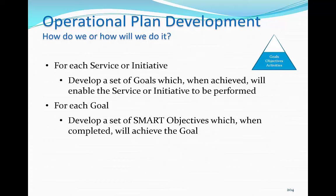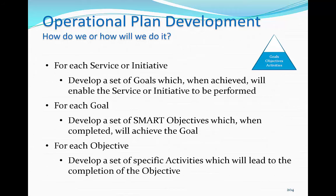SMART objectives are: Specific — they target a specific area for improvement. Measurable — they quantify or at least suggest an indicator of progress. Attainable — they are designed to assure that the end can be achieved. Realistic — they state what results can realistically be achieved given the available resources. Time-related — they specify when the results can be achieved. As an example: by January 9, 2016, complete the Ryan White Leadership Academy with a score of 90% or greater. For each objective, develop a set of specific activities which will lead to the completion of the objective.